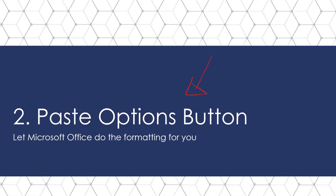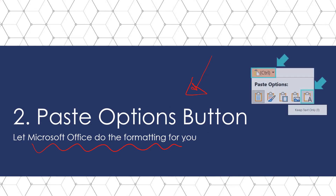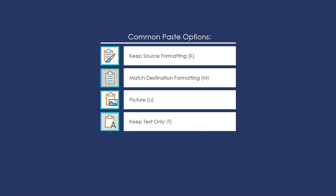Next, let's talk about the paste options button. The goal here is to get the Microsoft Office Suite to do the formatting for you. The most common paste options we use are keep source formatting, match destination theme, paste as a picture, use the paste special shortcut, and keep text only.